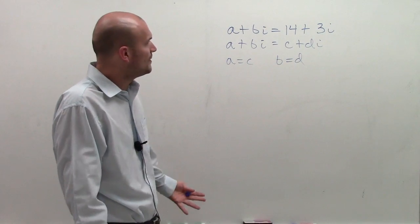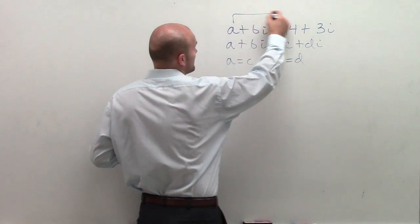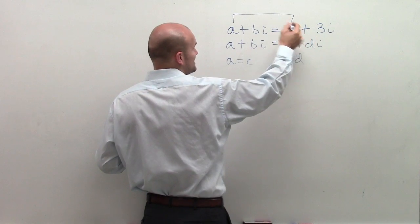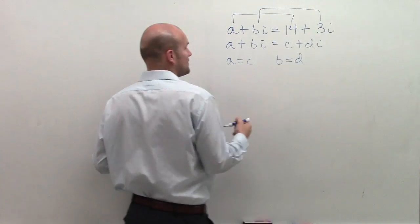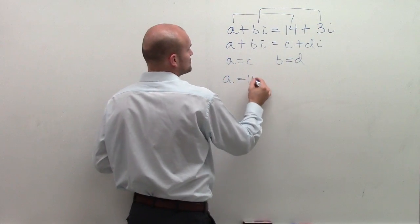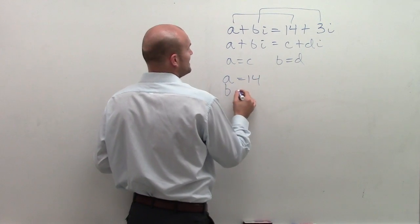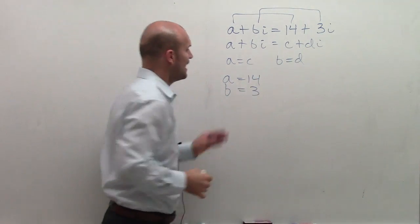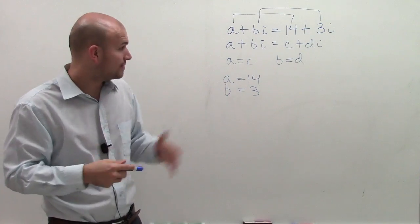So to do that, all we've got to do is take my A equal to my C and my B equal to 3. So as long as A equals 14 and B equals 3, I will have a complex number in standard form.